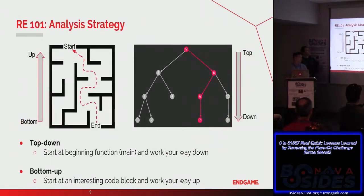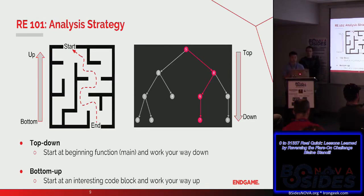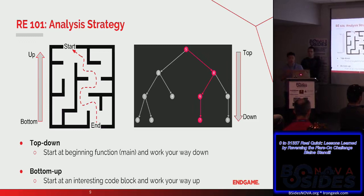For analysis strategies, a top-down approach means starting at the beginning of the function you want to analyze and working your way down from there, following the flow of execution to understand what the program does. With the bottom-up reversing strategy, you find an interesting code location — for example, if there's a win function you need to reach in a CTF binary, you start there and work your way backwards to see how you can direct execution to hit that win function.